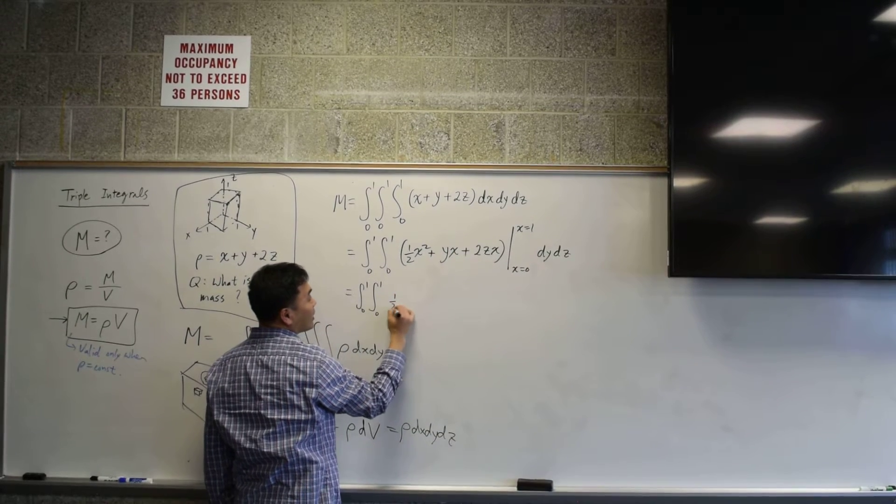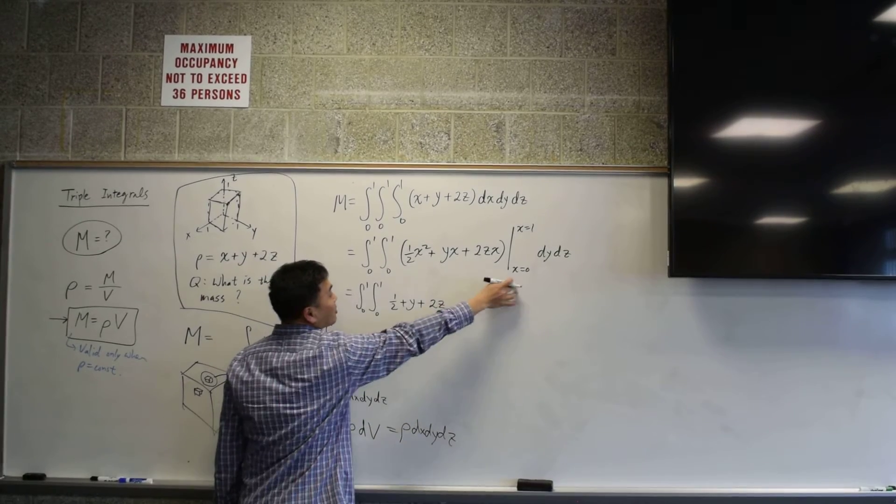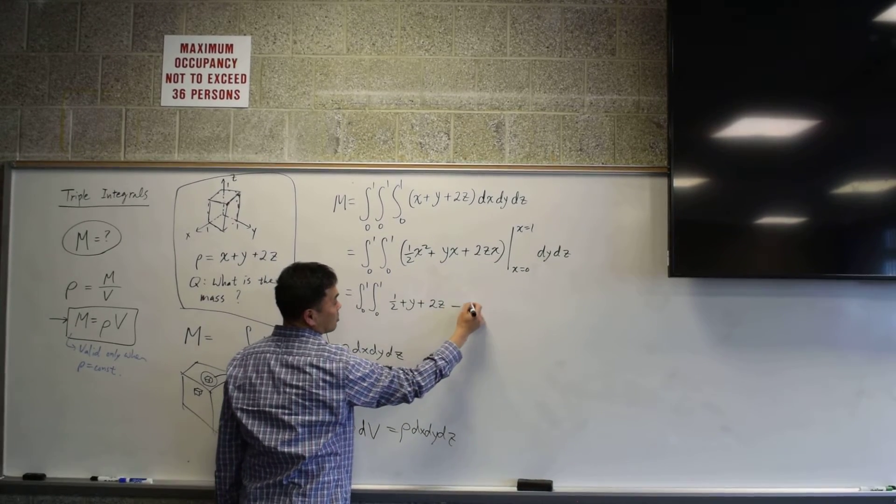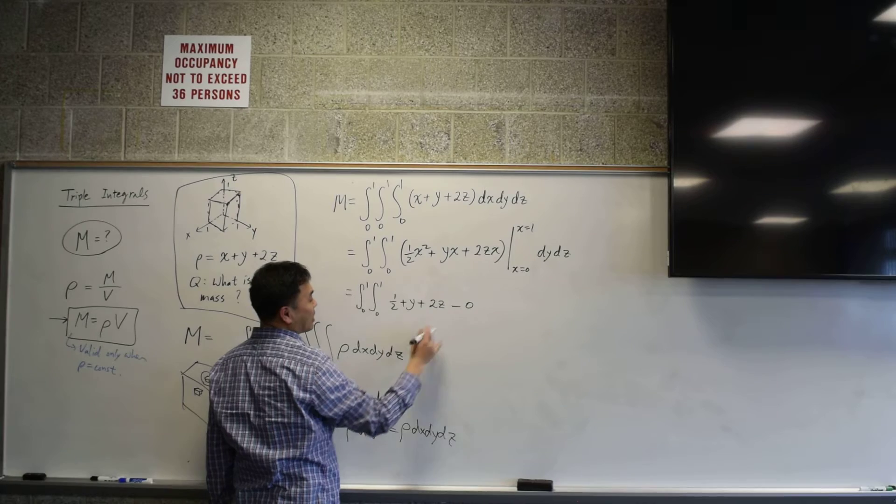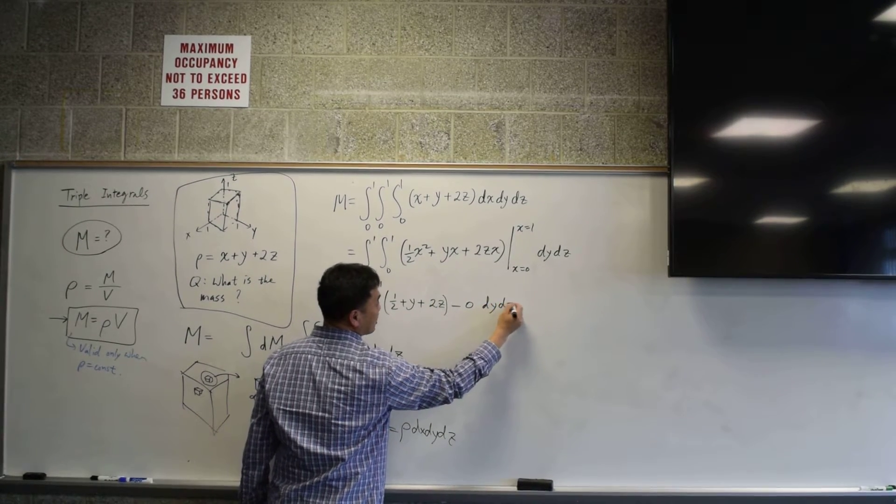So those one and zero has to be plugged into the x. You don't plug that into y or z, because we just integrate by x first, okay? Zero to one, zero to one. Let's actually do the calculation. If I plug in one, I get one half plus y plus 2z. And when I plug in zero, I get zero only, so you don't subtract anything. It's just minus zero, okay? So that's what we get. We still have to do dy, dz.